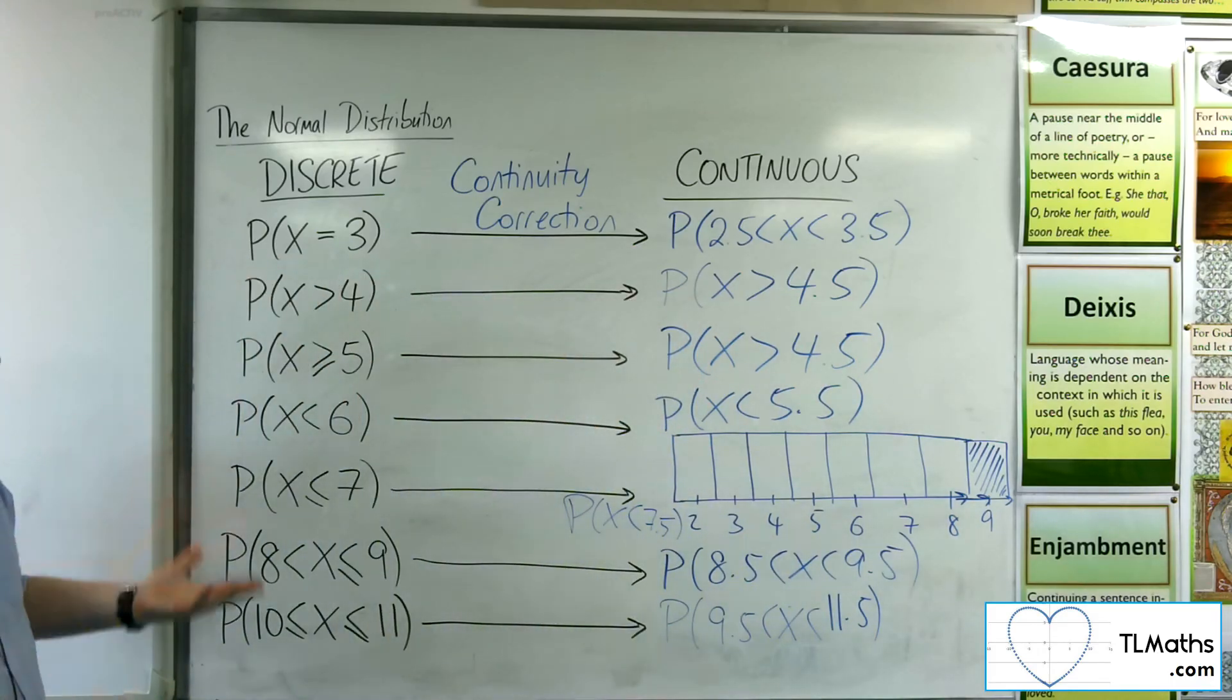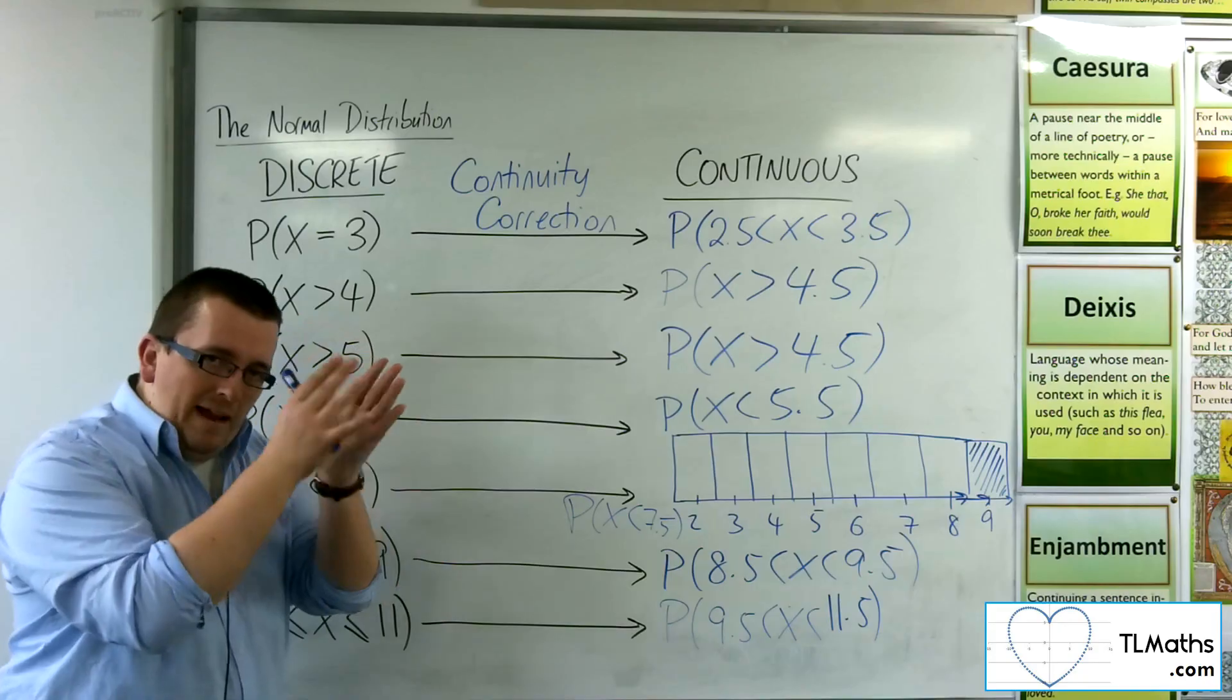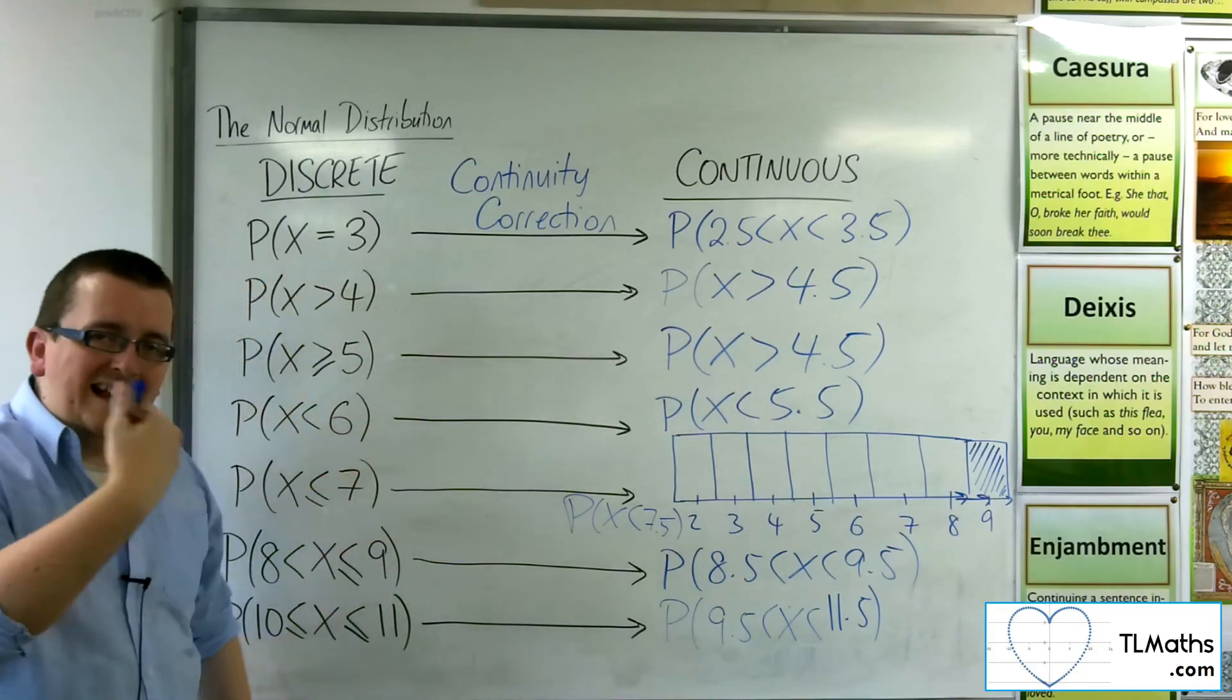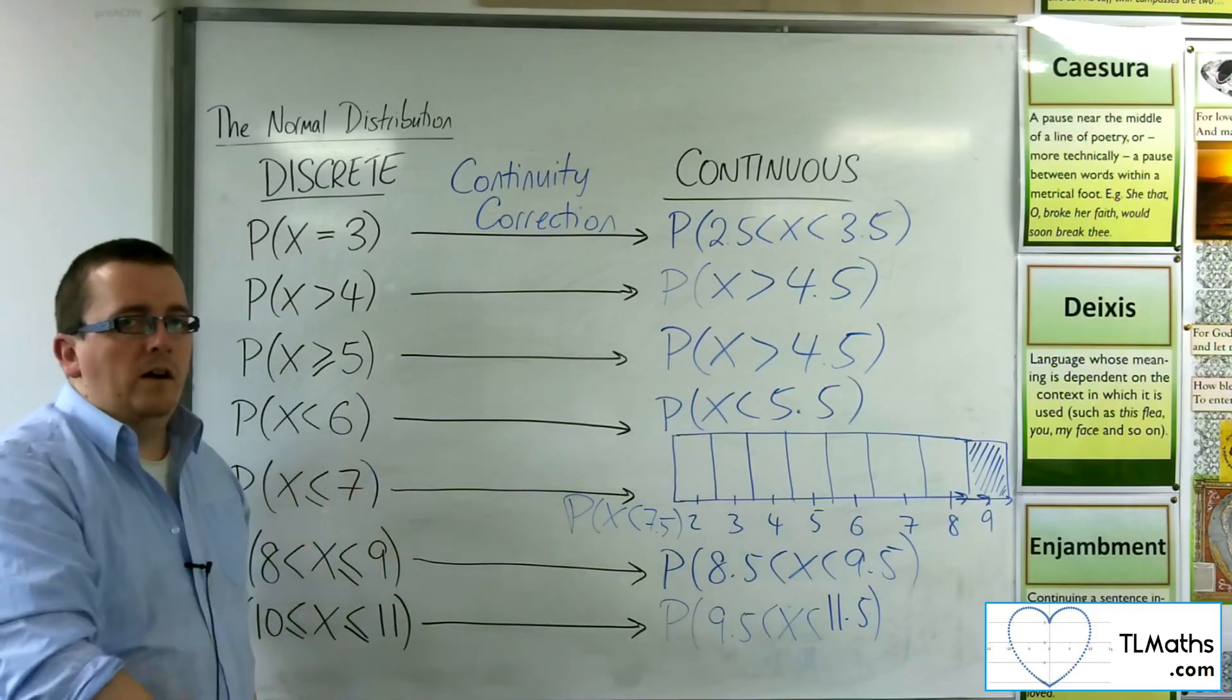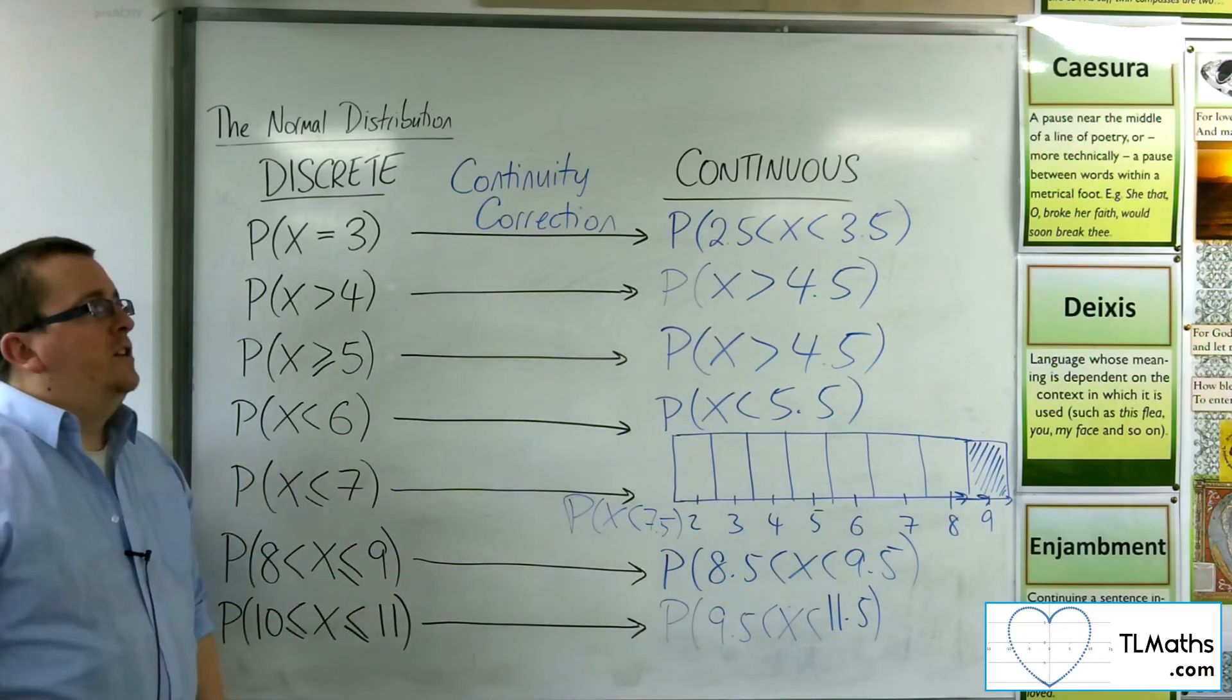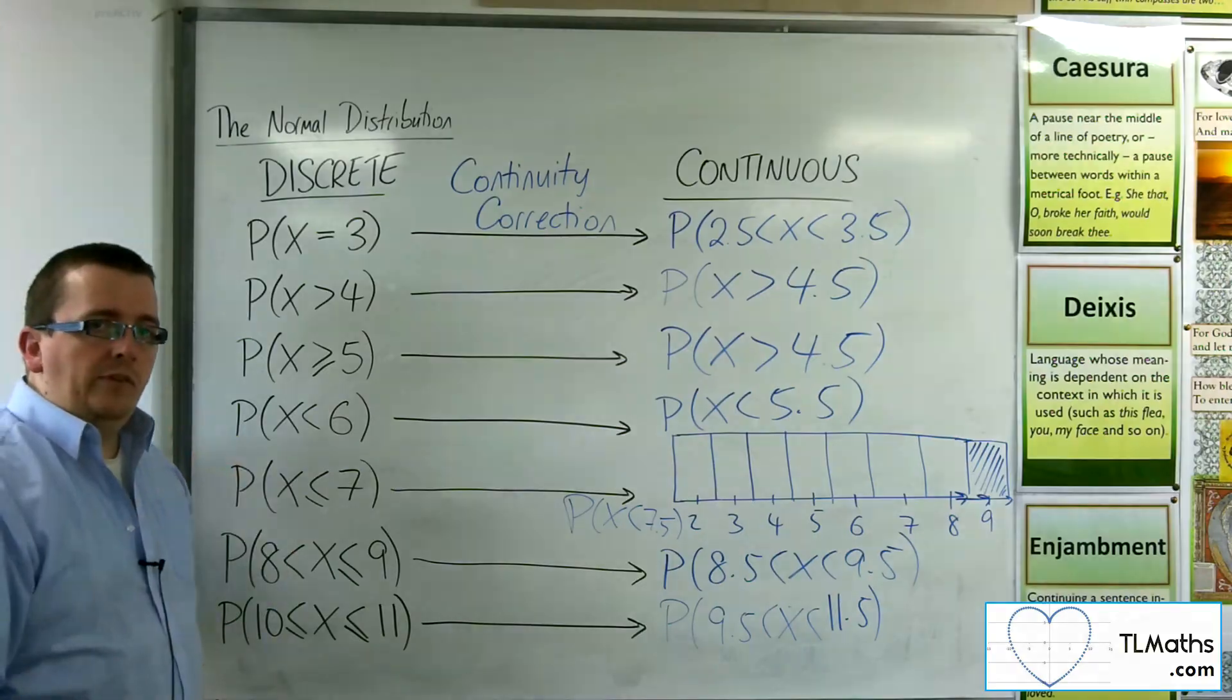And so that is how we can do this continuity correction. Imagine those discrete terms as bars and thinking about the area between halfway down and halfway up. That's the easiest way to remember this and to practice it.